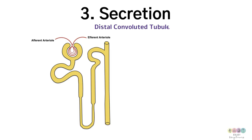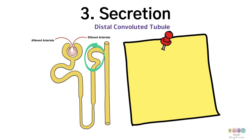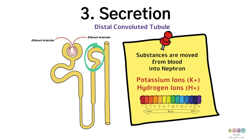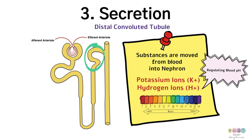The third and final stage in urine formation is secretion. This takes place at the distal convoluted tubule, where substances are moved from the blood into the nephron — the opposite direction from reabsorption. Many substances are secreted, for example drugs, but particularly potassium ions and hydrogen ions. Hydrogen ions are secreted to regulate blood pH — very important.